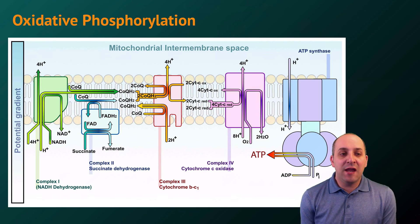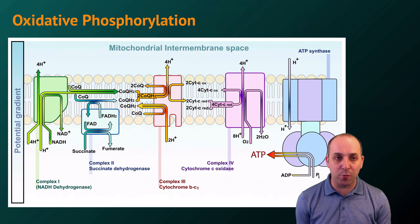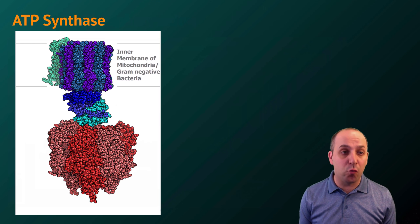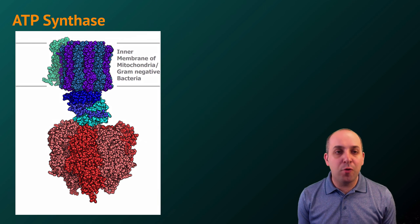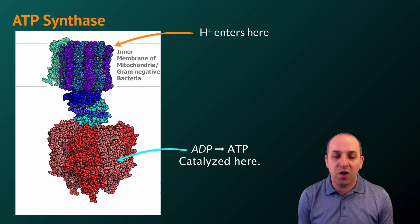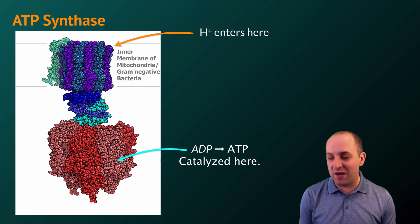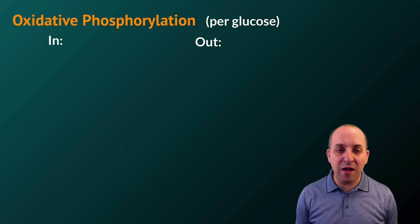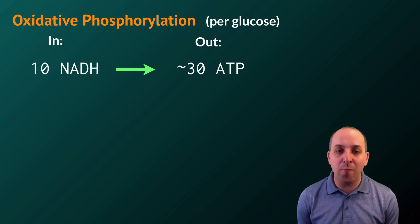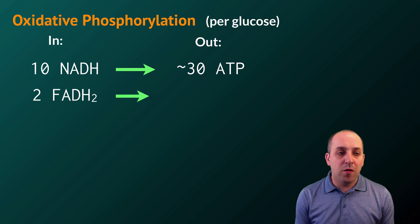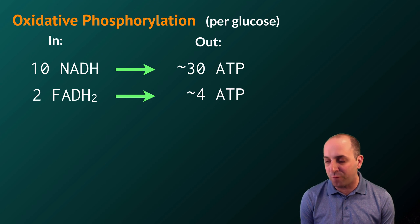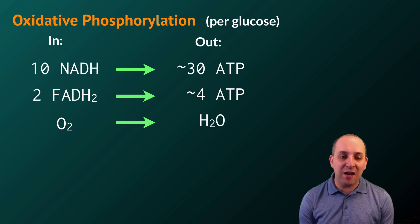Here's a diagrammatic representation of the electron transport chain in the mitochondrial inner membrane. I want to focus on the ATP synthase enzyme — protons enter the enzyme in one region, and the movement of those protons drives the catalytic activity that produces ATP from ADP in another region. Looking at the accounting for oxidative phosphorylation: the 10 NADH molecules are oxidized back to NAD+, and their electrons generate approximately 30 ATP. The 2 FADH2 molecules are oxidized back to FAD, generating approximately 4 more ATP. And of course, oxygen is reduced into water.